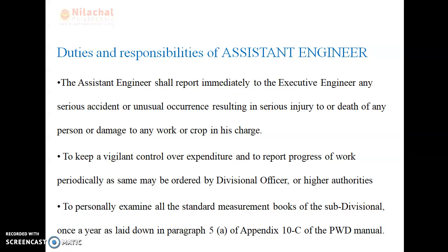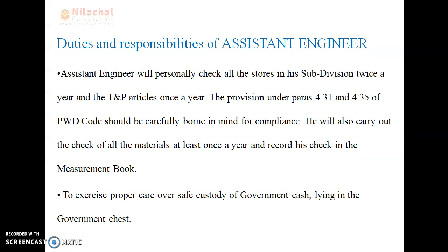All the standard measurements taken at the site for the execution of particular work have to be maintained in the manual of PWD (Public Works Department). The assistant engineer will personally check all the stores in his subdivision twice a year, and the TNP articles once a year as per provisions under 4.31 and 4.35 of the PWD code. He will also carry out a check of all the materials at least once a year and record his check in the measurement book.